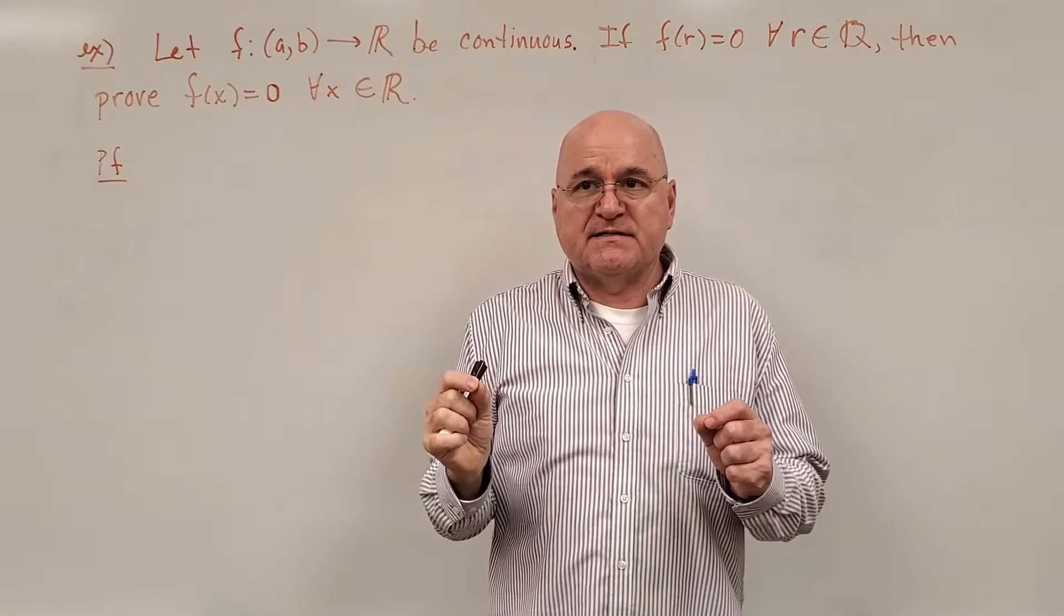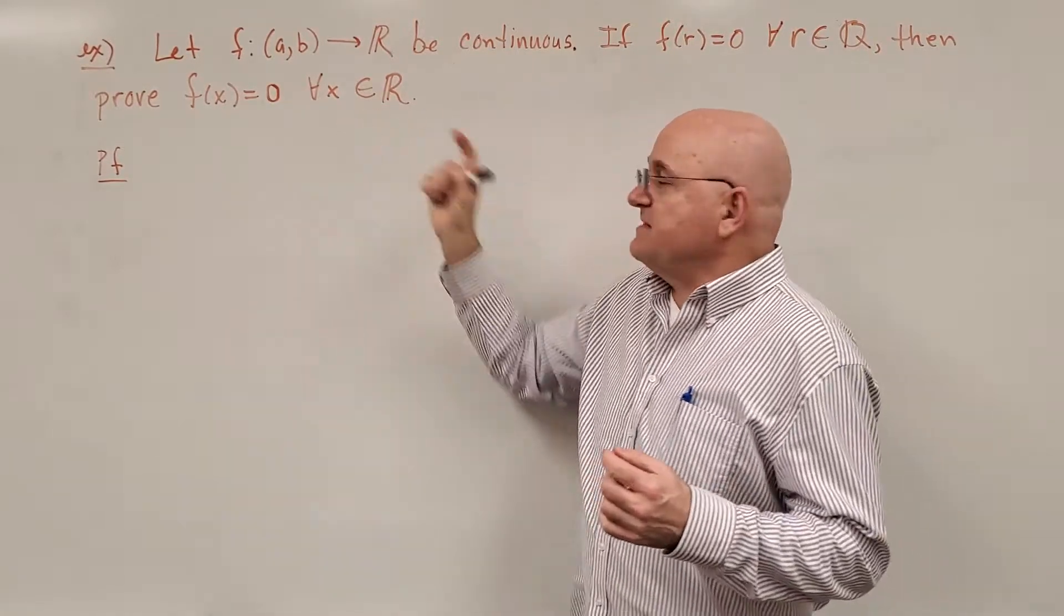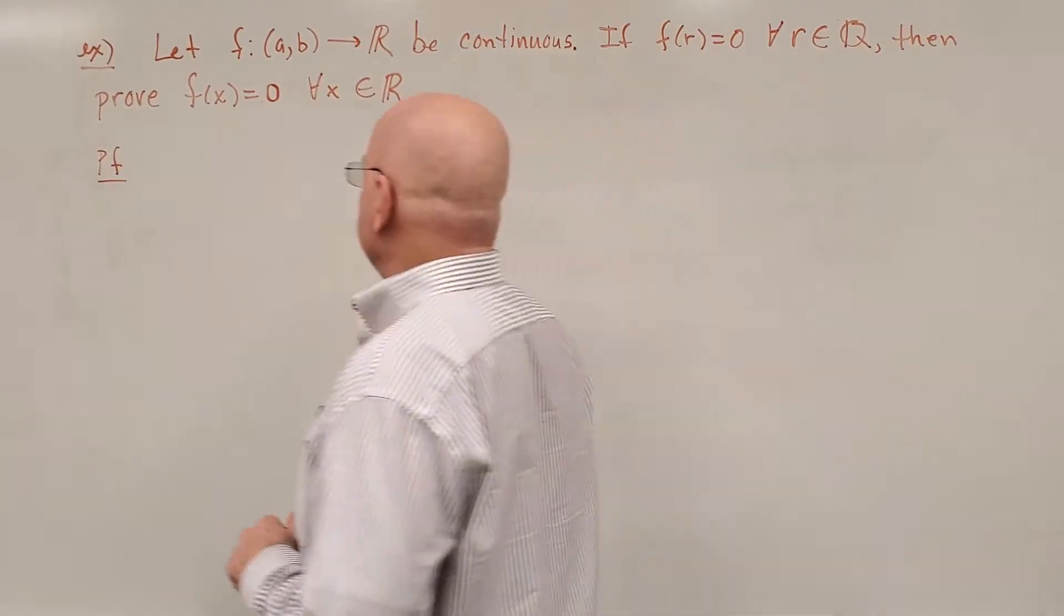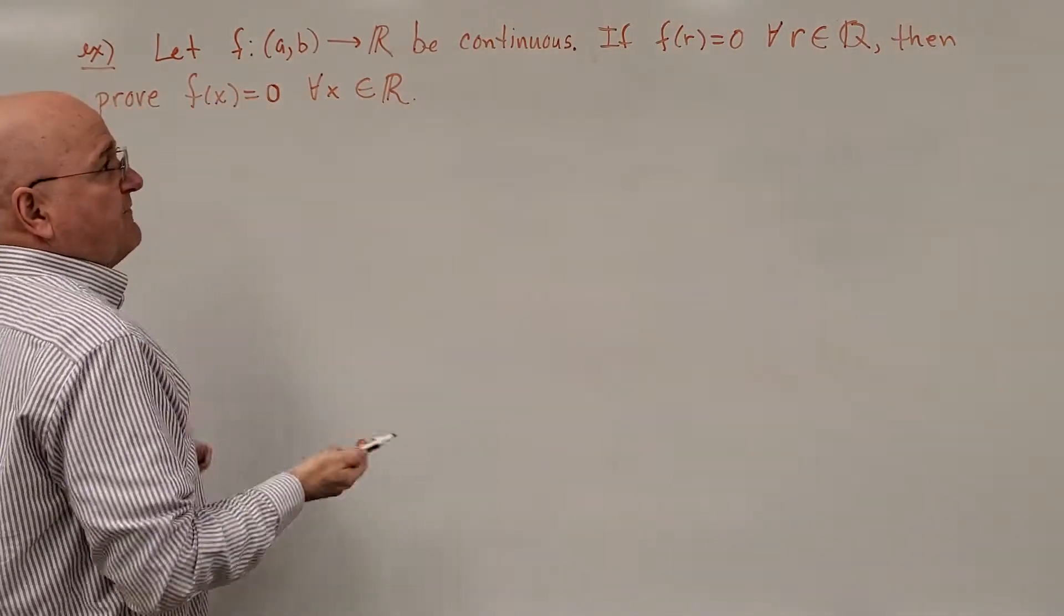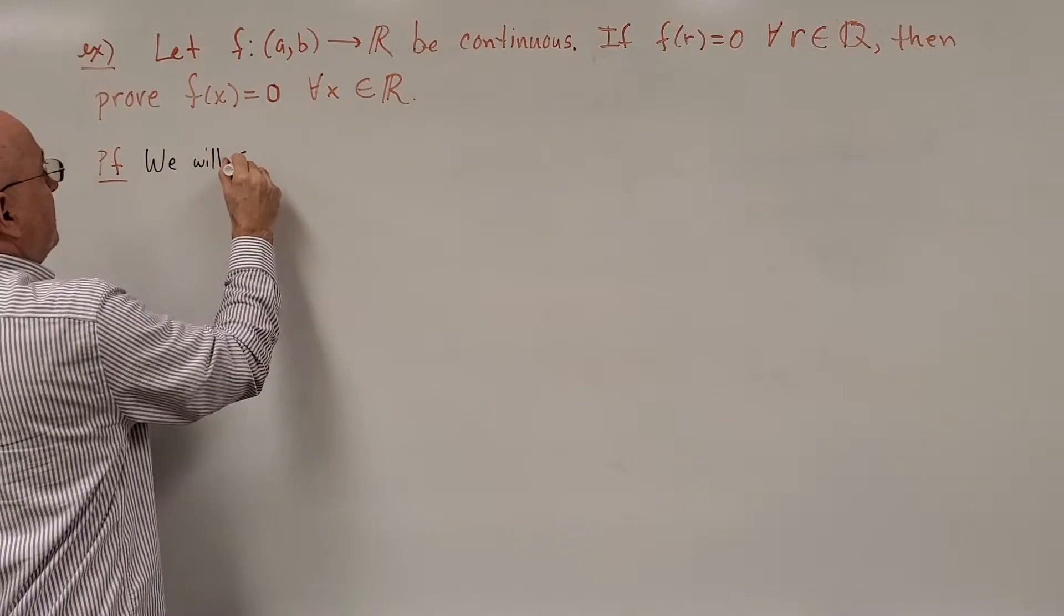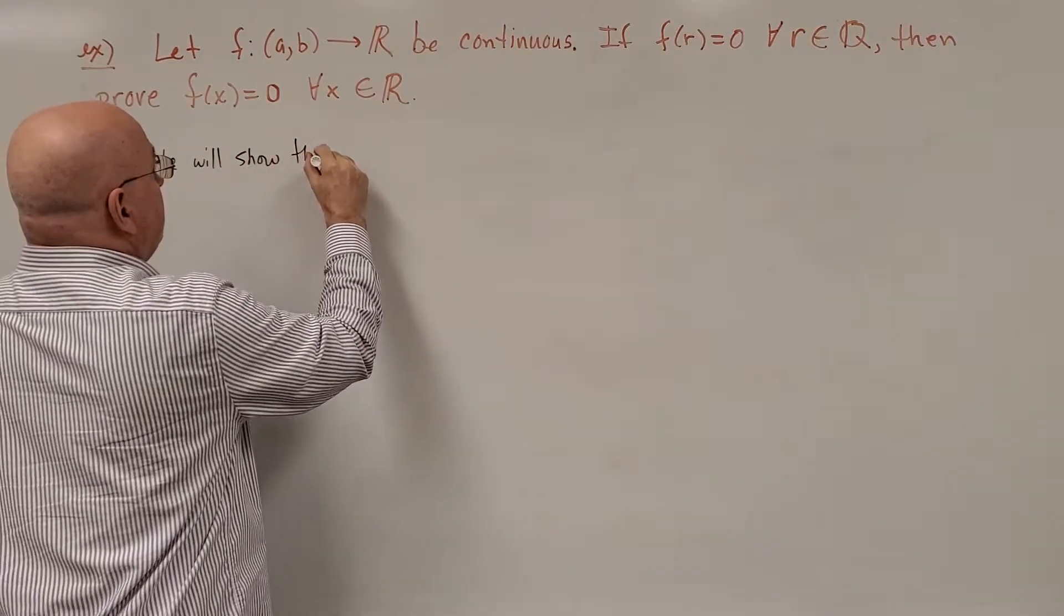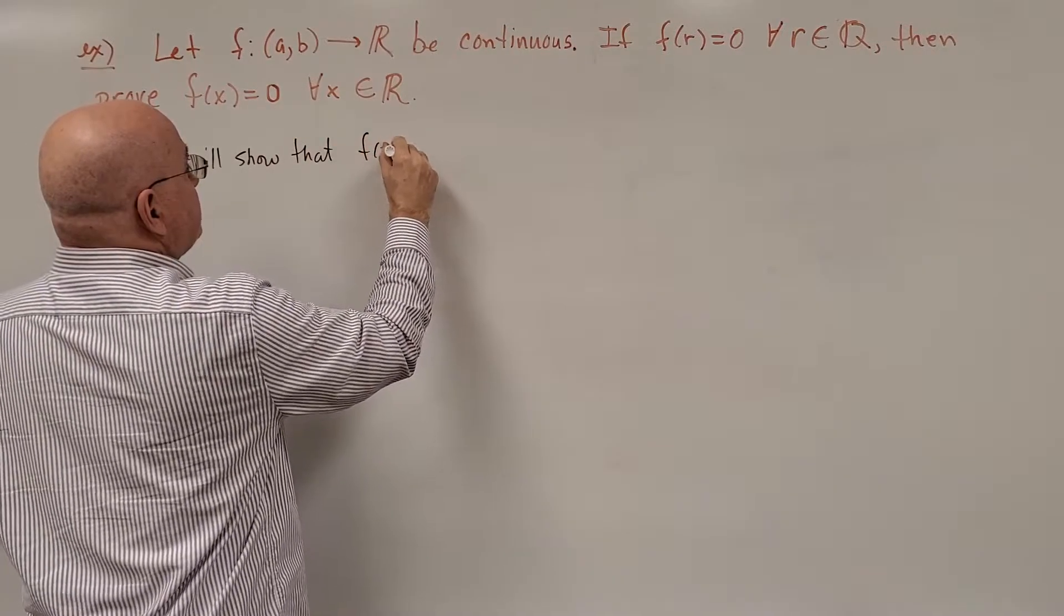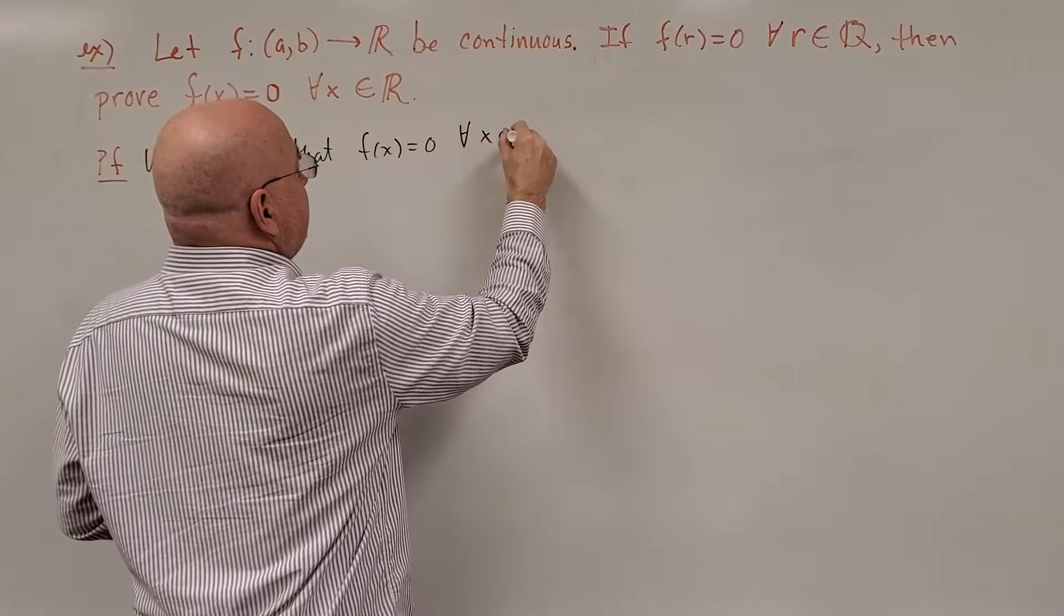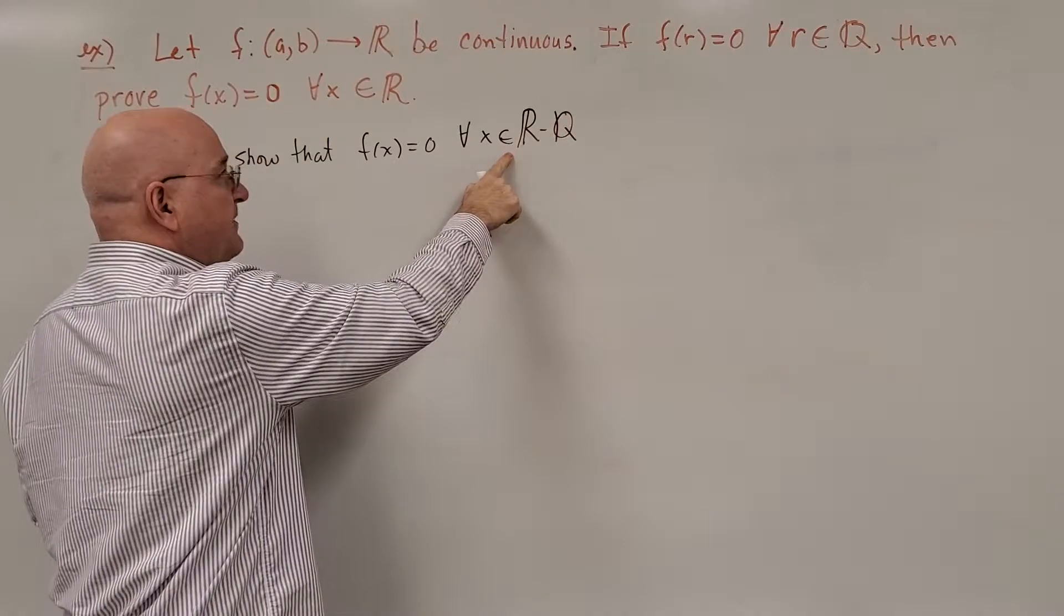All that it remains to see, or that we need to show, is that f(x) is going to be 0 for the irrational numbers, since we know it's true for the rationals. So I'll start off the proof by just saying, we will show, or it remains only to show,